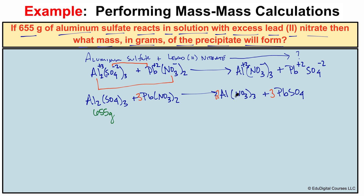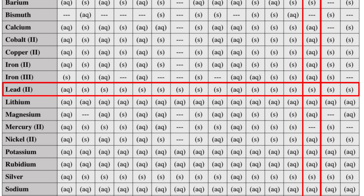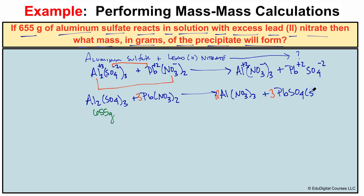Aluminum nitrate stays dissolved in the solution. However, lead two sulfate is not soluble in water — it is going to precipitate out of the solution. This is the solid material that forms, and this is the precipitate we are asked to find. So we want to figure out the mass in grams of lead two sulfate.